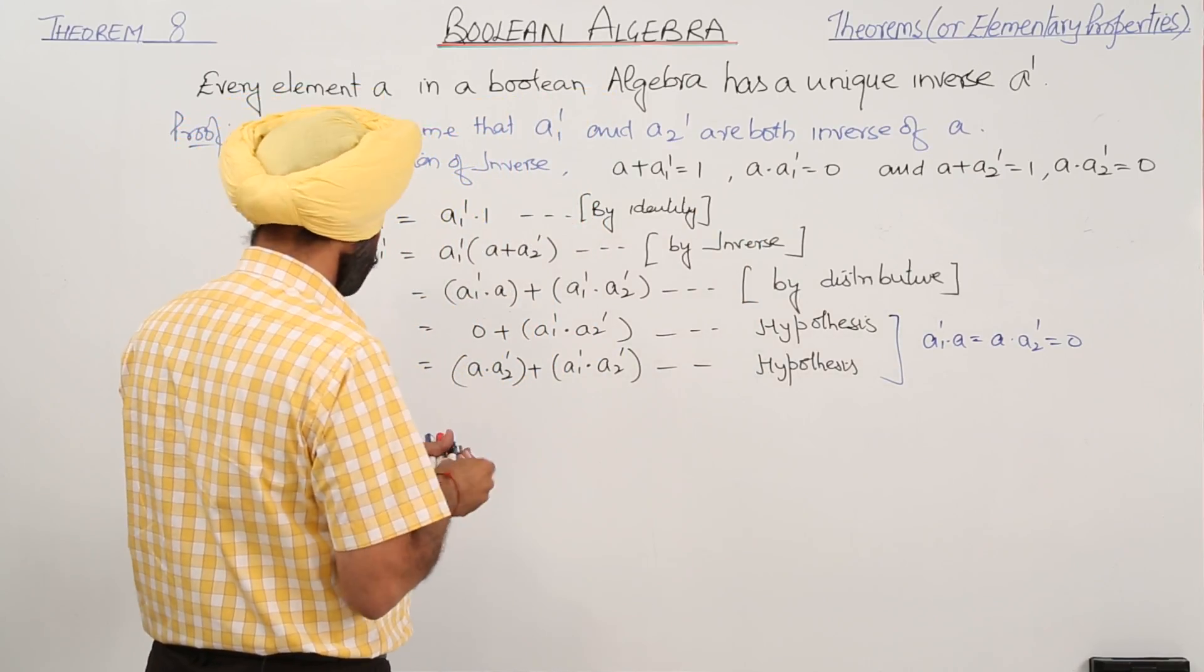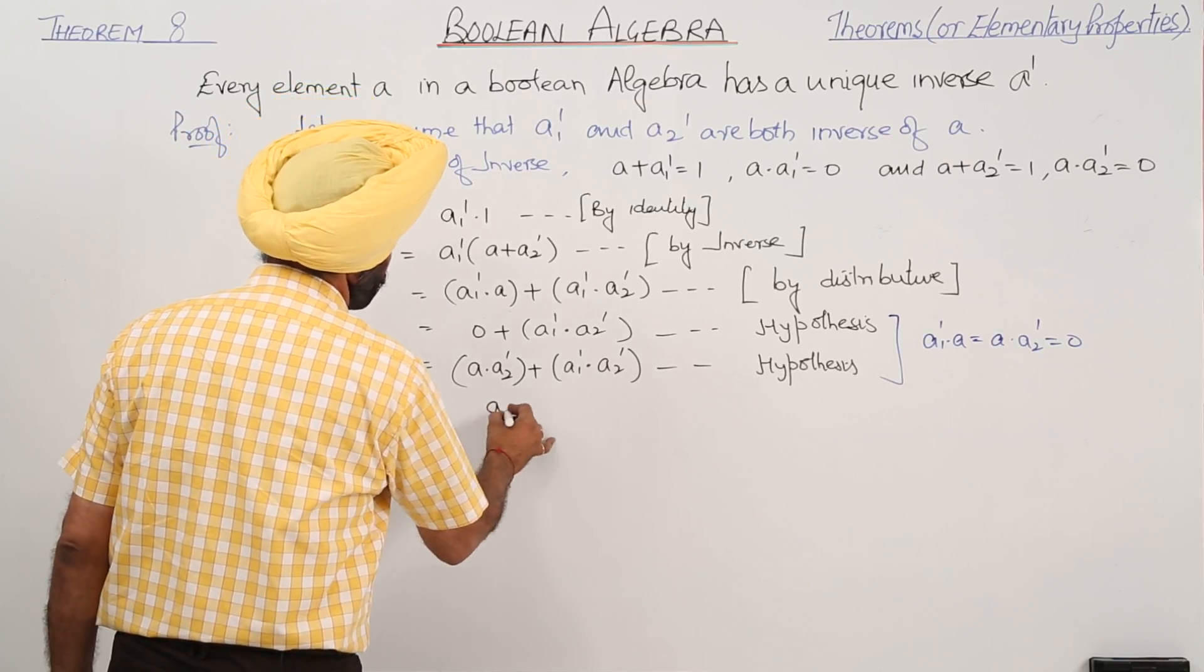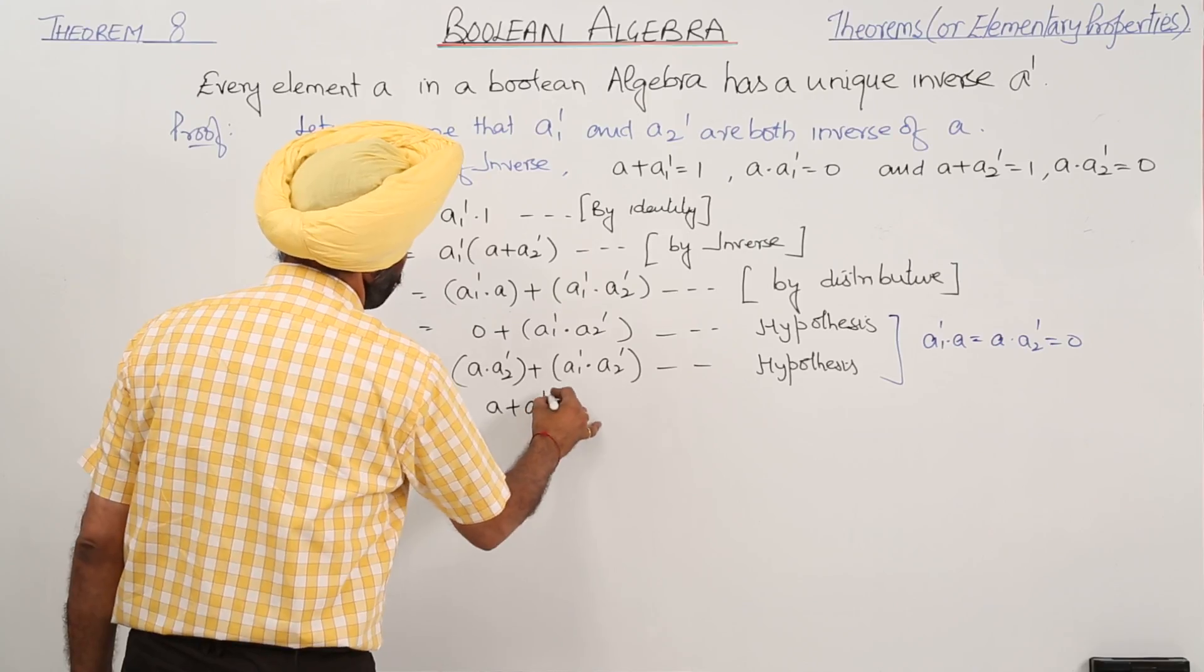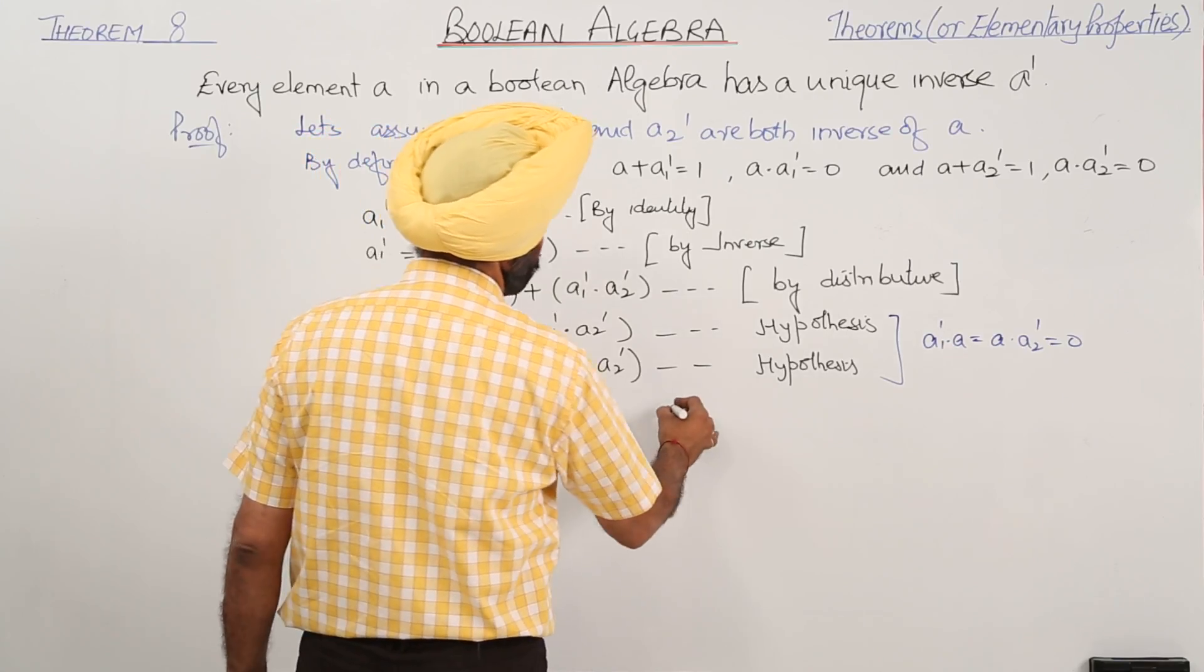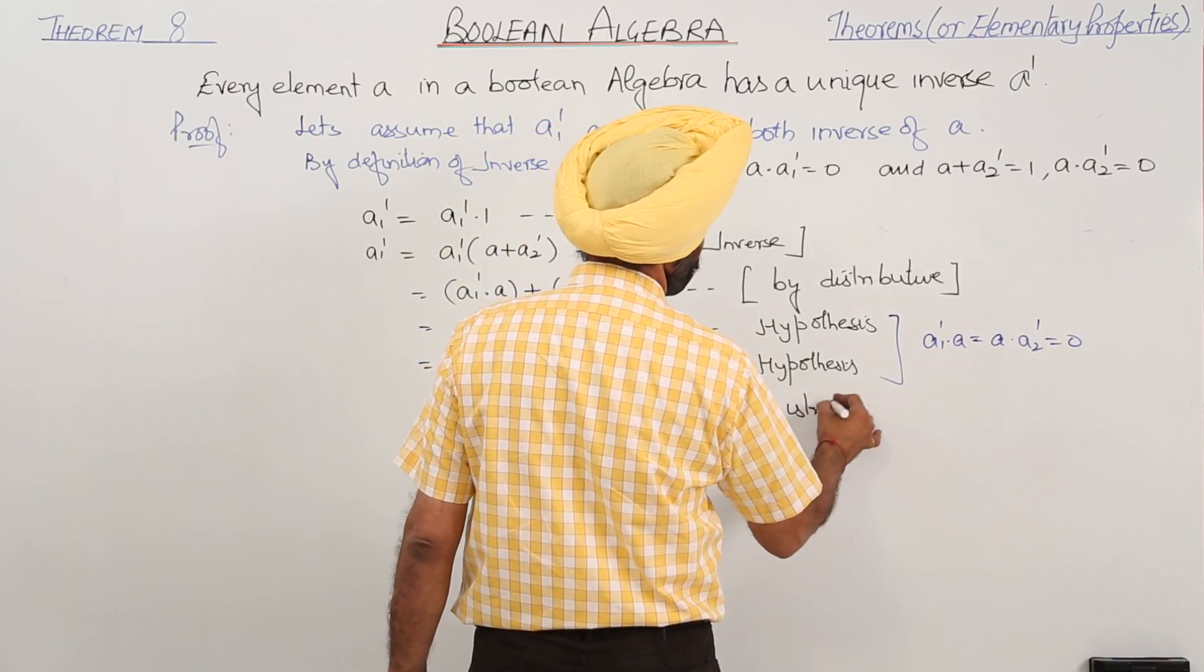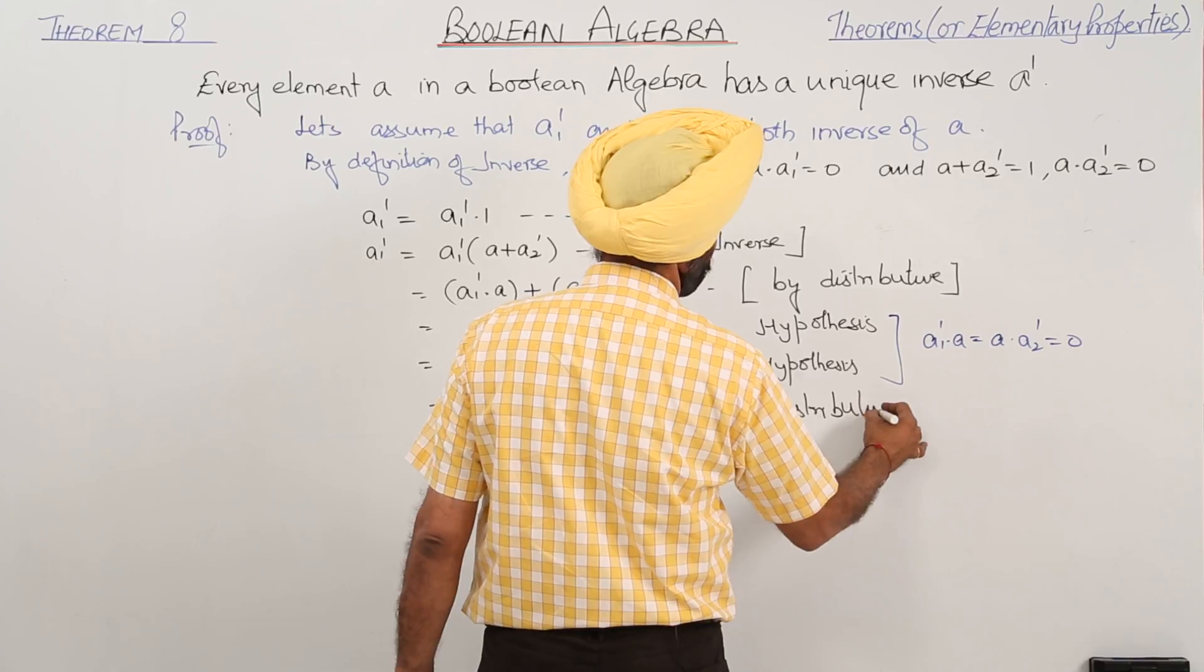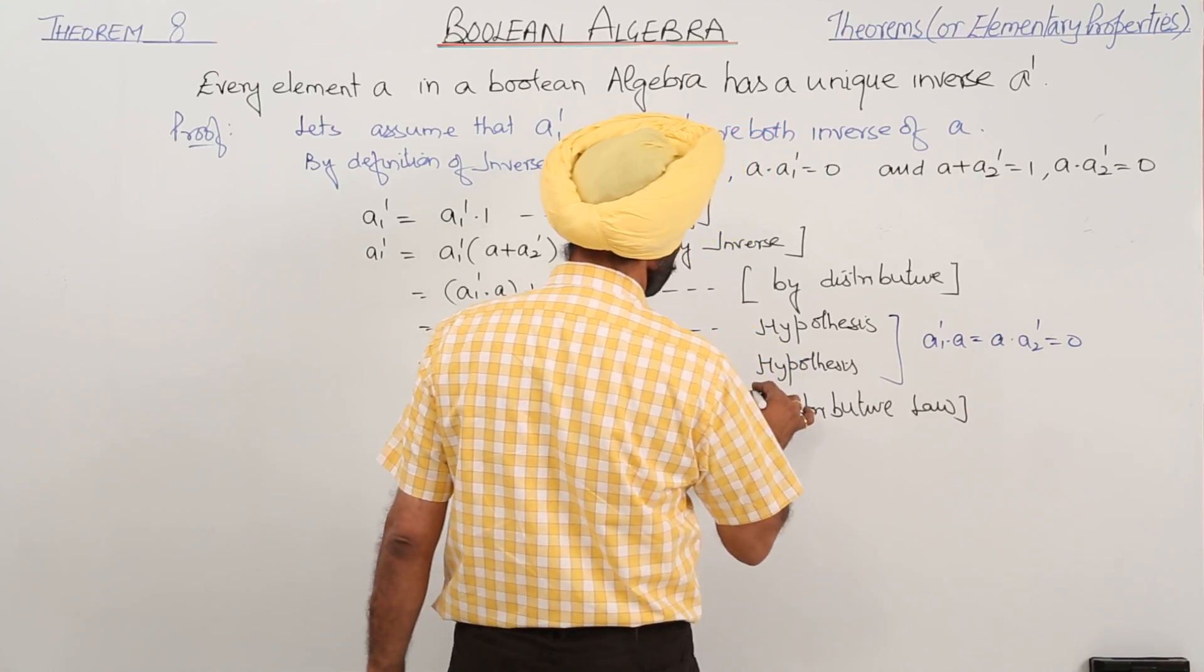Now further, this becomes A plus A1 inverse, in brackets, dot A2 inverse. Distributive law.